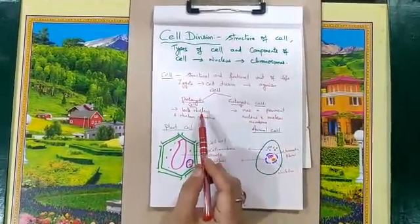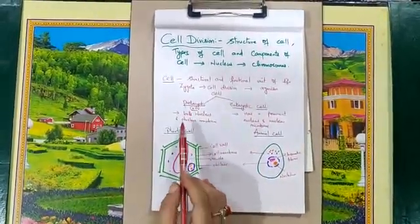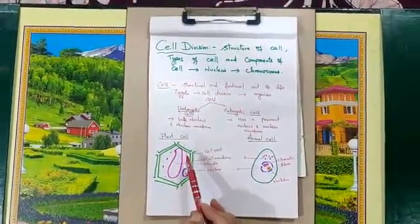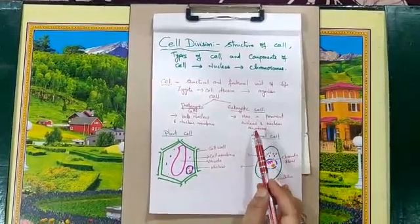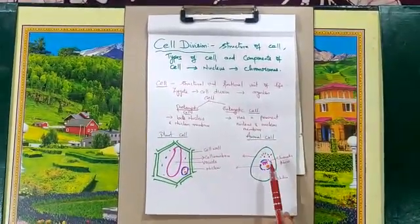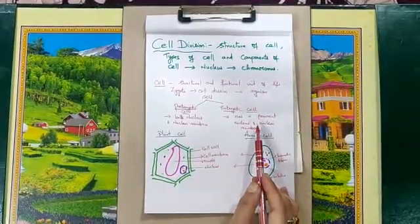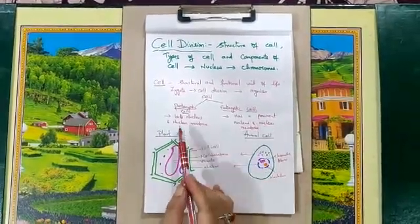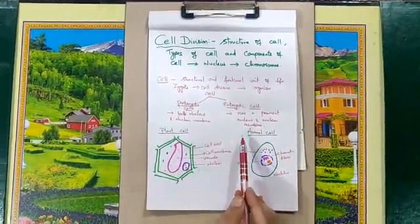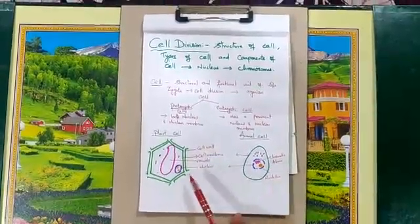Cells are of two types: prokaryotic and eukaryotic. A prokaryotic cell lacks a nucleus and a nuclear membrane, whereas a eukaryotic cell has a prominent nucleus with a well-defined nuclear membrane. We human beings are eukaryotic; bacteria is a prokaryotic cell. The two types of cells are plant cell and animal cell.